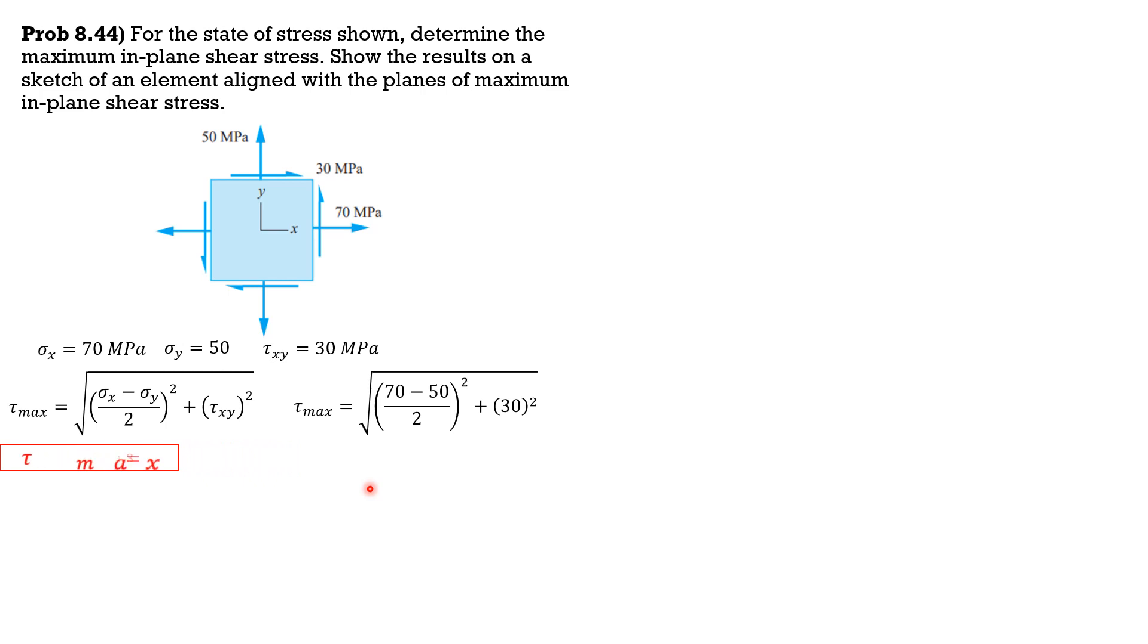Let's verify the sign later. Let's locate the angle. Tangent 2 theta equals negative of quantity (sigma x minus sigma y) over 2 tau xy. Tangent 2 theta is negative of quantity (70 minus 50) over 2 times 30, so 2 theta is negative 18.45 degrees. Then theta is negative 9.218 degrees.